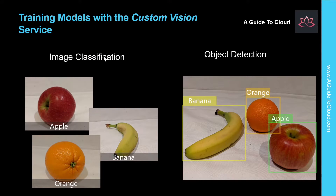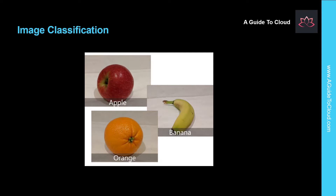Now let's understand training models with the custom vision service. The custom vision cognitive service enables you to train a custom model for either image classification or object detection. Image classification is a machine learning technique in which the object being classified is an image, such as a photograph. Creating an image classification solution involves training a model using a set of existing data for which the class is already known — in this case, categorized images which you upload to the custom vision service and tag with appropriate class labels. After training, you can publish the model as a service for applications to use.